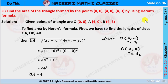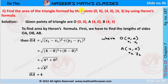Now we are going to solve page number 187, second one. Find the area of the triangle formed by points (0,0), (4,0), (4,3) using Heron's formula. The points are O(0,0), A(4,0), and B(4,3).